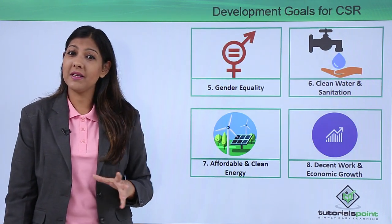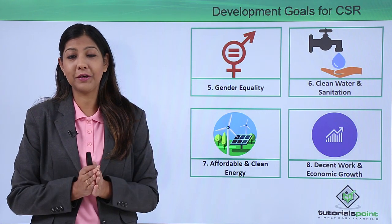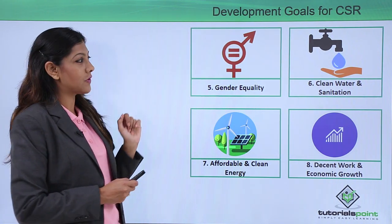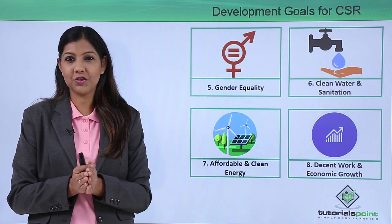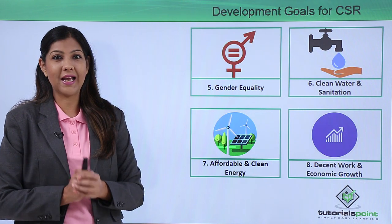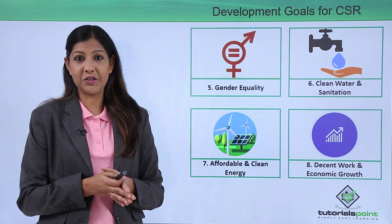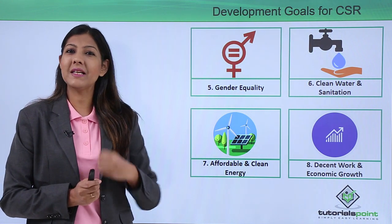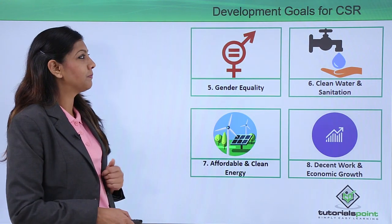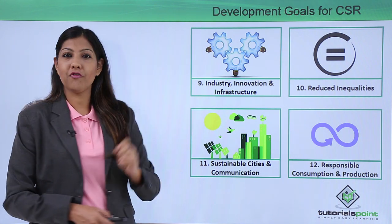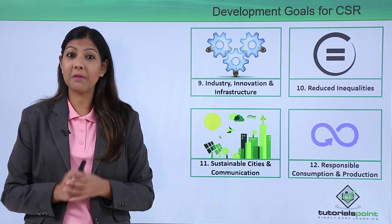Fifth is gender equality — many companies are fighting to ensure that women get as much equality as men. Sixth is clean water and sanitization — corporates are doing as much as they can to ensure proper hygiene conditions and upgrade sanitization. Seventh is affordable and clean energy — not available in villages where people are struggling for power and electricity. Eighth is decent work and economic growth. Ninth is industry, innovation, and infrastructure — wherever possible, good infrastructure and industries will provide employment for people.